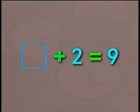Next! What number plus two equals nine? Seven plus two equals nine. Now, let's try three. What number added to three equals nine? Correct! Six added to three equals nine.